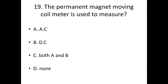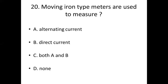Nineteenth bit. The permanent magnet moving coil meter is used to measure dash. Option A: AC. Option B: DC. Option C: Both A and B. Option D: None. Answer: Option B, DC.